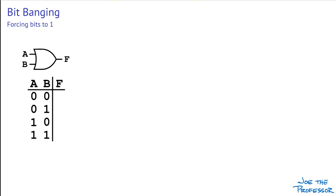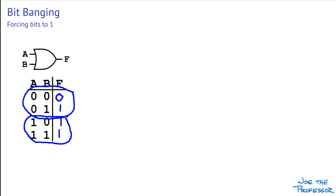Let's look at forcing bits to 1. The OR operation is used to force bits to 1. Notice that if either input to an OR gate is set to 1, then the output must be 1. If we OR any value with a mask that has bits set to 1, then the result must have 1s in the same bit positions as the ones in the mask. Where there are 0 bits in the mask, the output will have the same values — 0 or 1 — as the original input value.